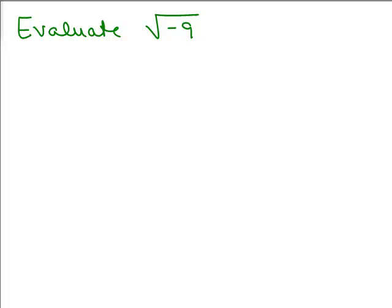Let's say you were given this problem, evaluate square root of negative 9, you would think, okay, what numbers can I multiply by itself? What number can I multiply by itself and get negative 9? Well, remember when we began, when you squared a number, it was positive?